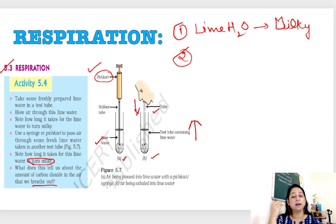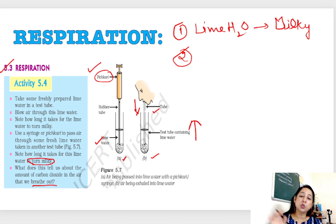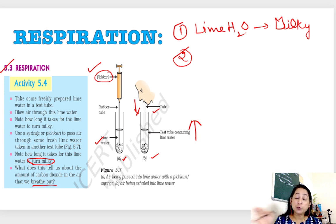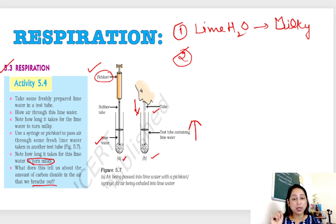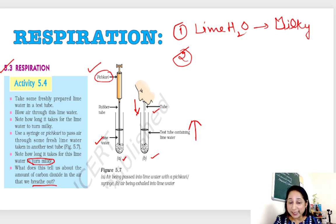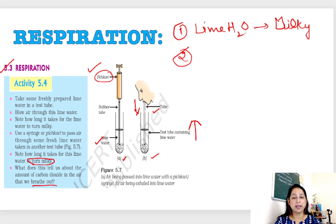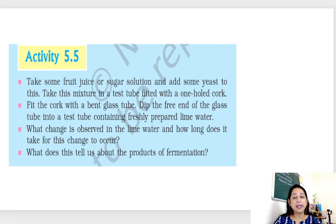How is this question asked in the paper? They can directly give you a statement: frame an experiment to prove that carbon dioxide present in exhaled air is more. Or they can give you the picture and ask: why is lime water kept in the test tubes? In which test tube will lime water turn milky faster? What is the purpose of the syringe, and what are we proving by blowing directly into the lime water?